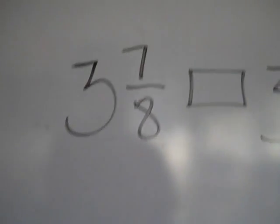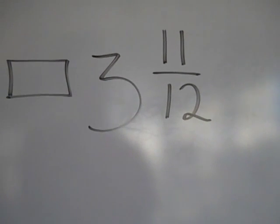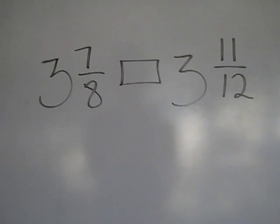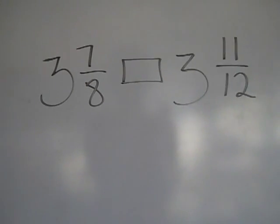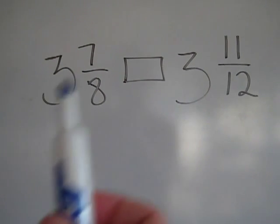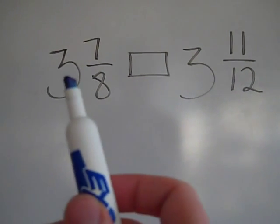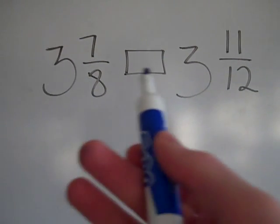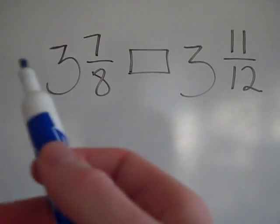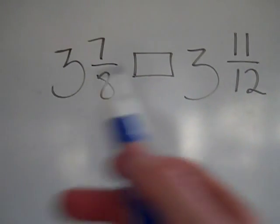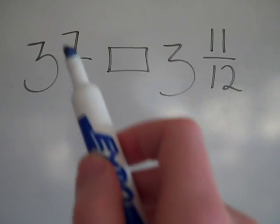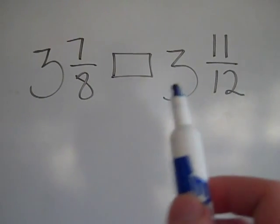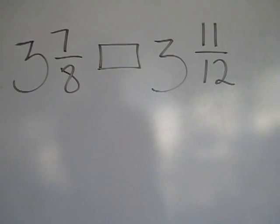In my next example I have three and seven-eighths compared to three and eleven-twelfths. This looks different because these are mixed numbers with a whole number in front. But if the two whole numbers are the same — and they are both three here — you can completely ignore the whole numbers and only look at the fractions. So I'm comparing seven-eighths and eleven-twelfths: they both have three wholes, but which fraction part is bigger?